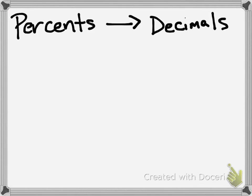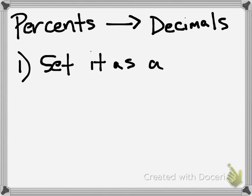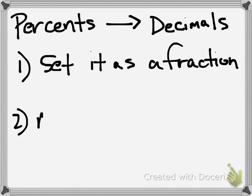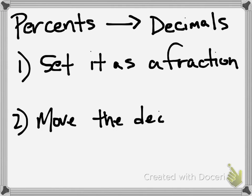When we're converting from percents to decimals, there are basically two methods. Method number one is to set it as a fraction, and method number two is to move the decimal point. We're going to look at both of those in detail.